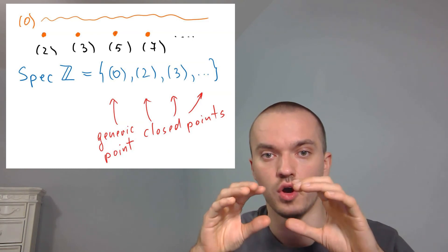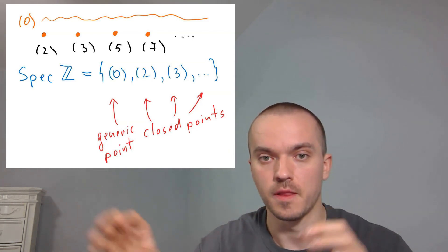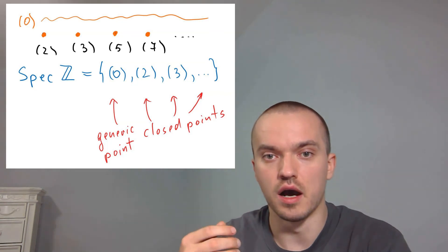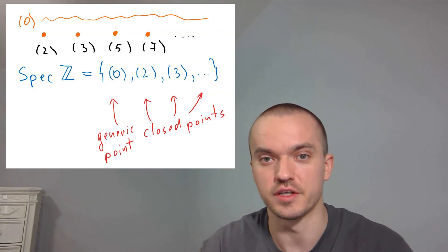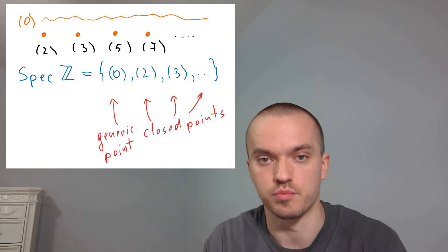Zero is going to be a cloud, and the reason why is if you consider the closure of zero, the closure is going to be the whole thing. So in some sense, zero is super close to every other point in your space.